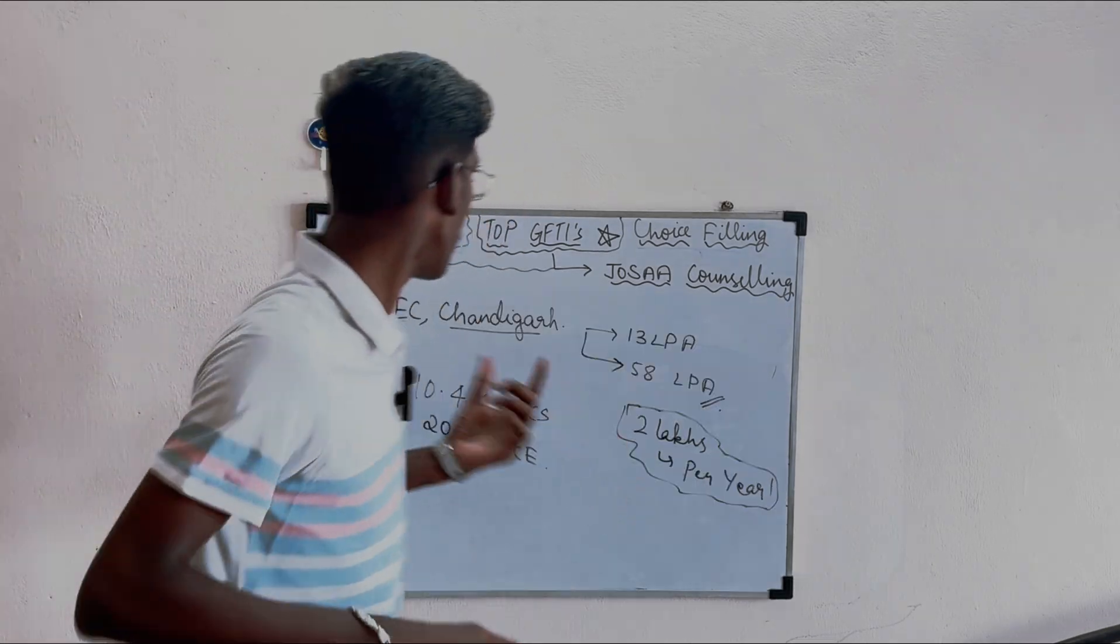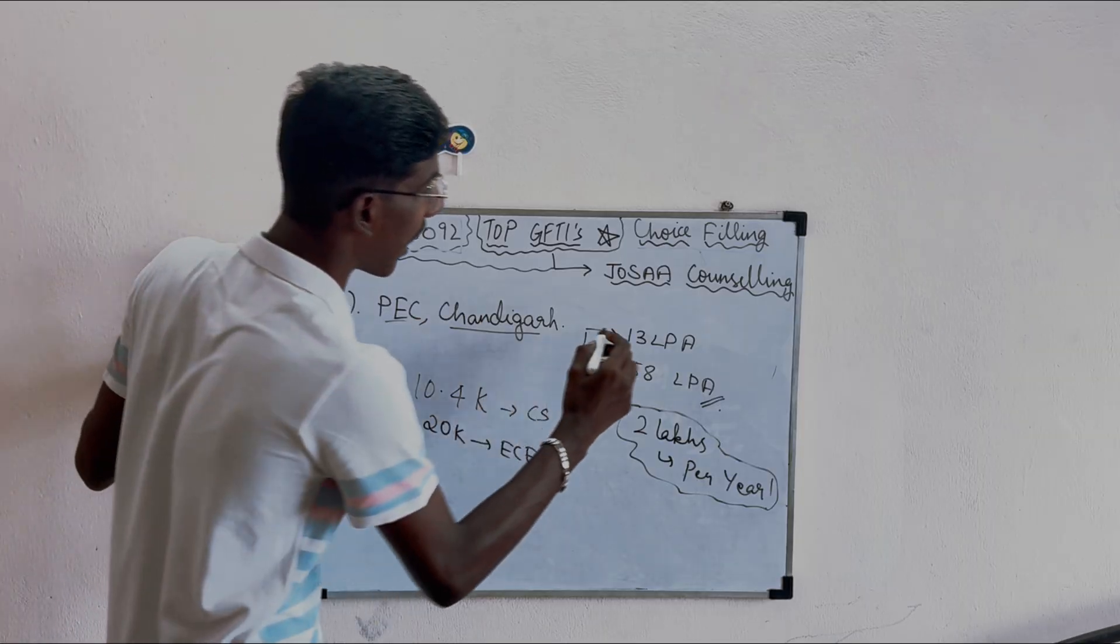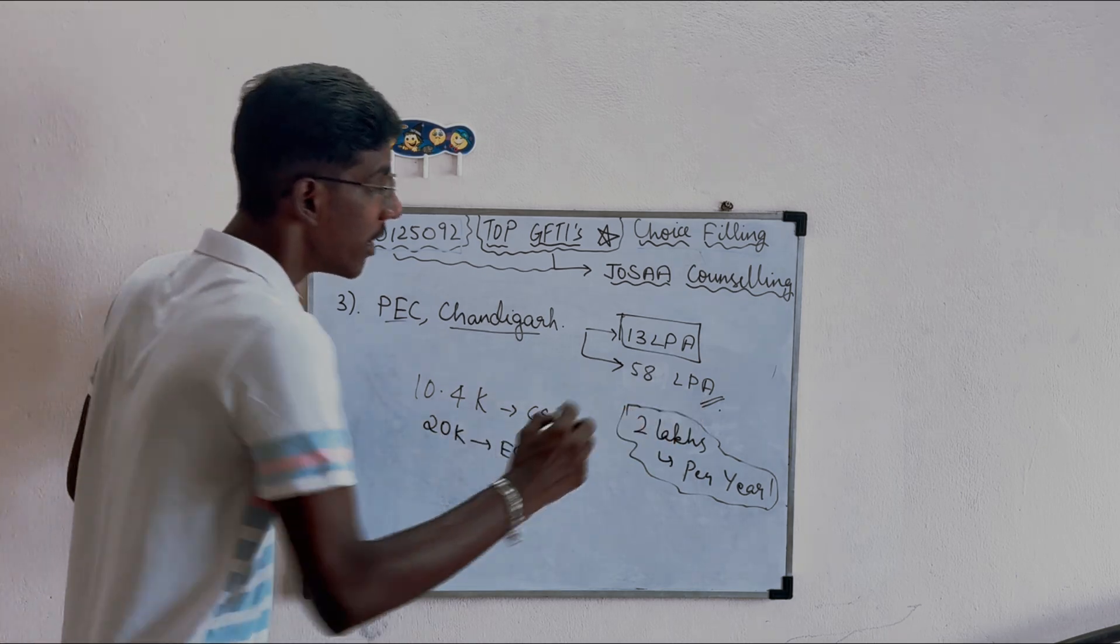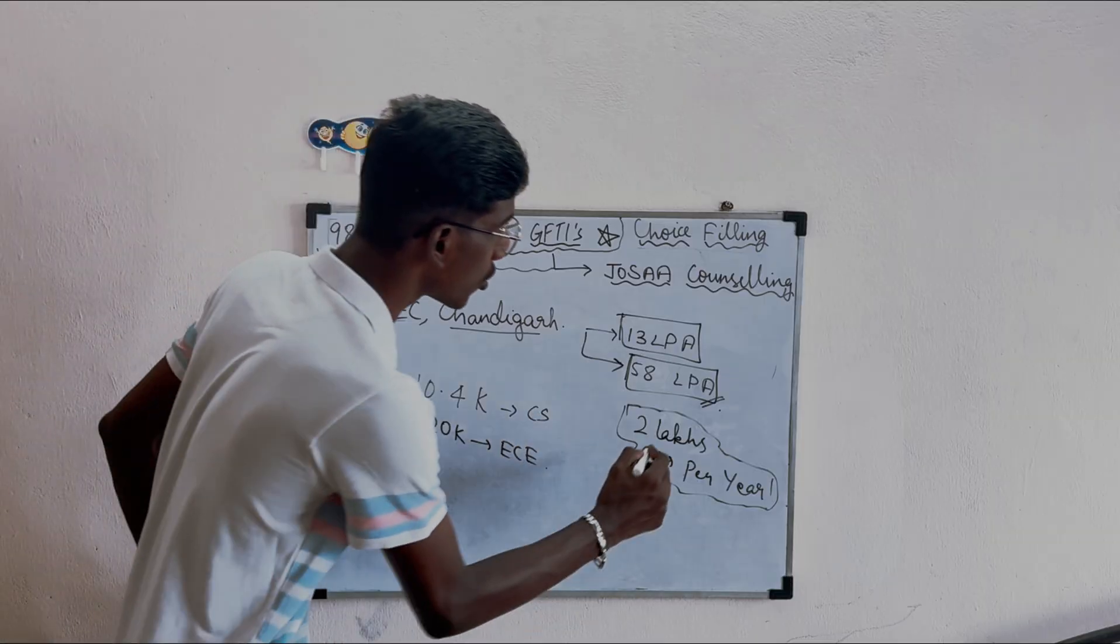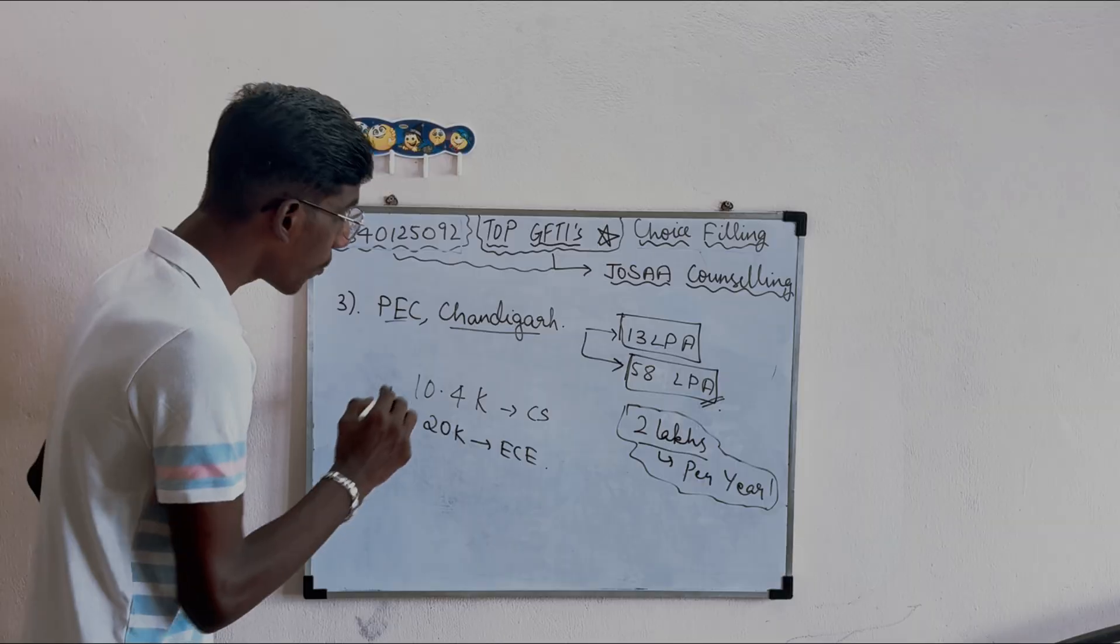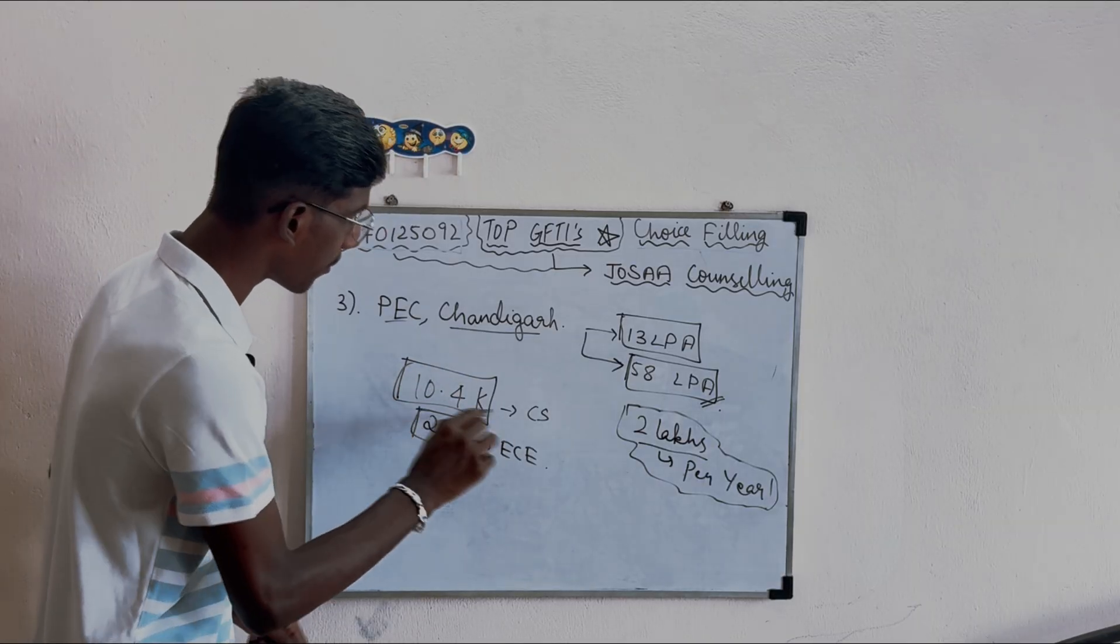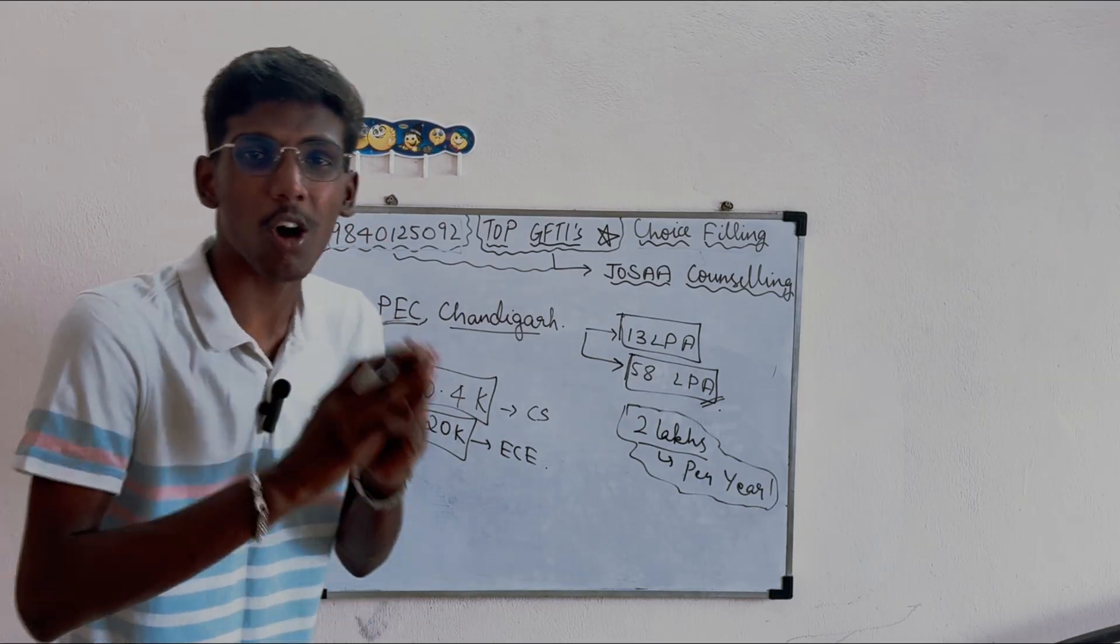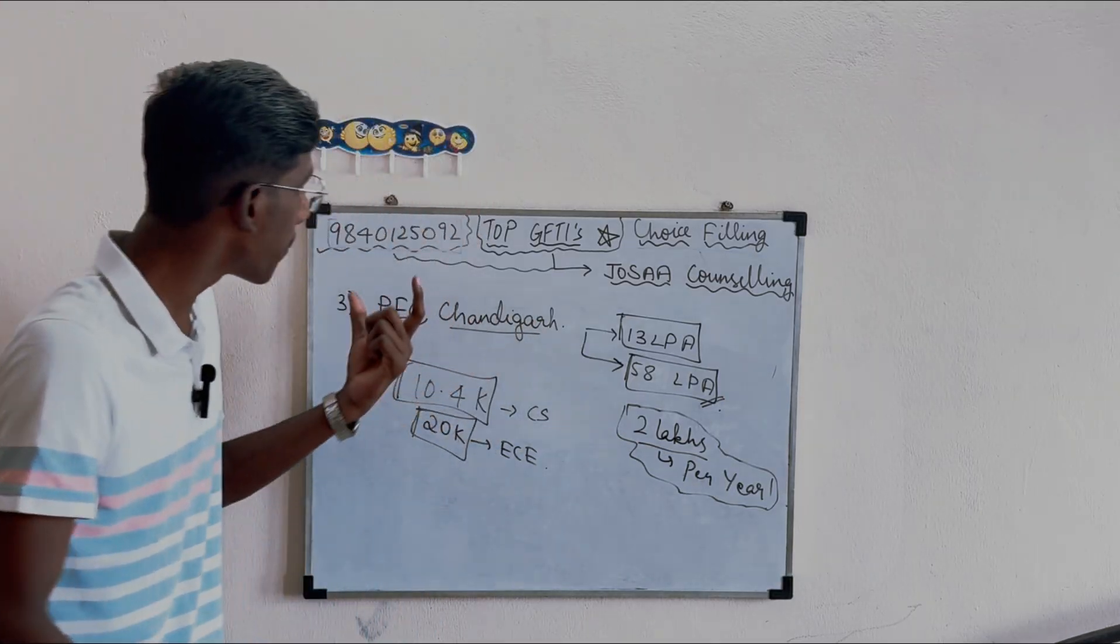Third best GFTI: PEC Chandigarh - Punjab Engineering College Chandigarh. Median LPA is 13 LPA, highest is 58 LPA. Fee per year is 2 lakhs including academic and hostel fees. Open category rank for CS is 10.4k, for ECE is 20k. It's comparable to IIIT level.